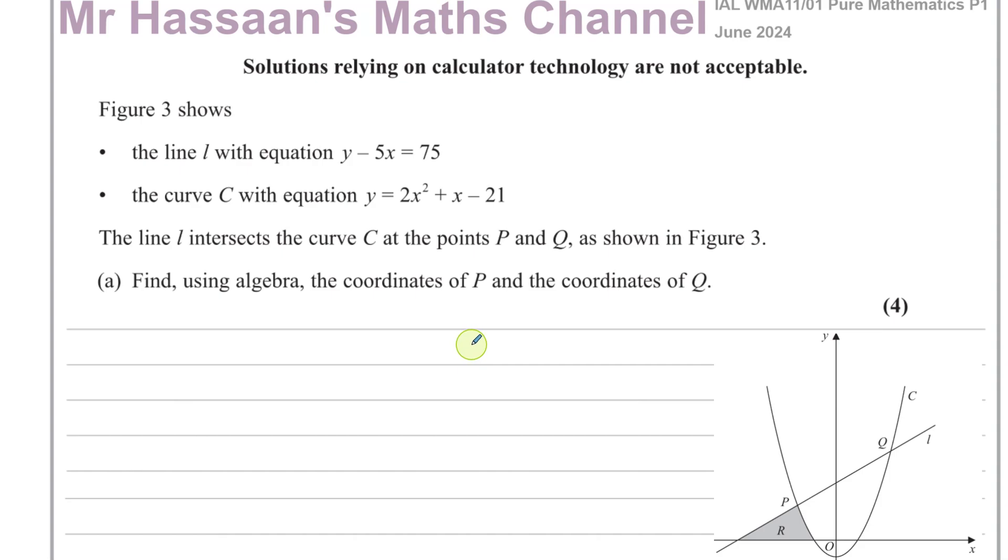We can do that by substitution. I don't really like to say equate the two equations. The way I like to do it is say let's substitute one equation into the other. So I can see there's a y here and I know that y is equal to this. So if I replace the y with this, I've substituted one equation into the other. The resulting equation I get will tell me about the intersection between those two. So if I just replace this y with 2x squared plus x minus 21.